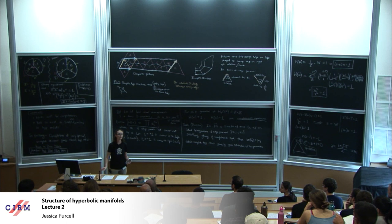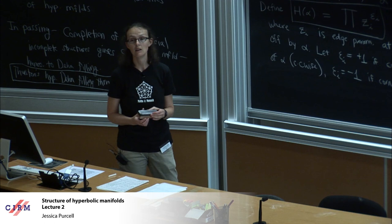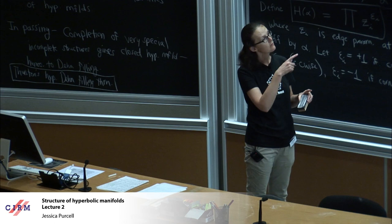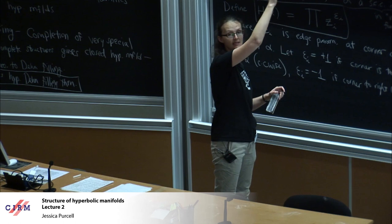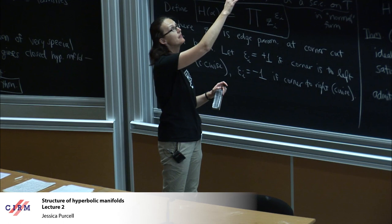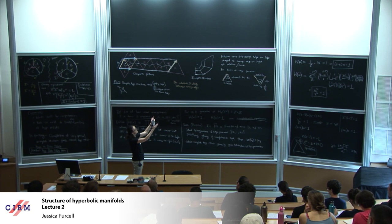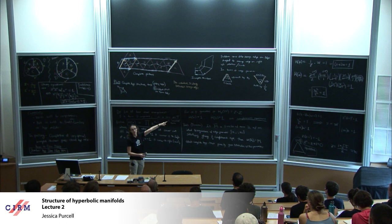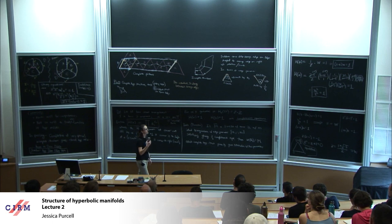Question: can you stipulate the slope for the Dehn filling in terms of the affine torus? Yes, you can. The way it works is: this affine torus is going to be missing a point. If there's no scaling as you move around that point, there's going to be a pure translation, the completion is attaching a geodesic, and a neighborhood of that geodesic is a solid torus — that gives your Dehn filling. To get the right slope, instead of completeness equations you use Dehn filling equations: you still get H of alpha and H of beta, but they now satisfy some different value corresponding to the Dehn filling slopes.